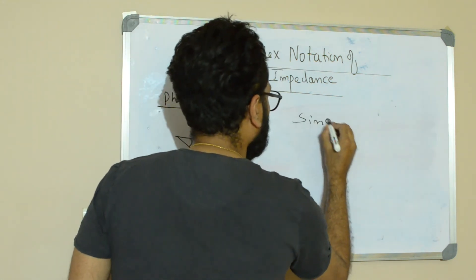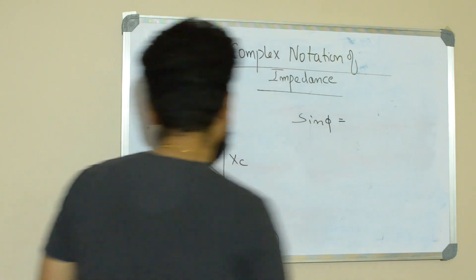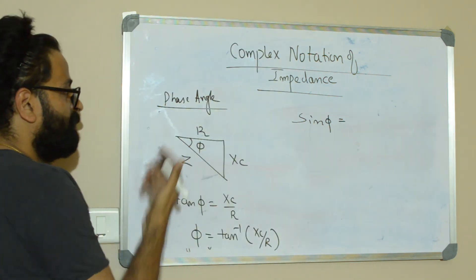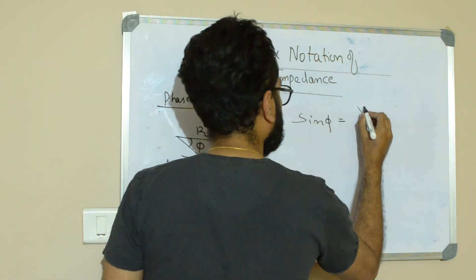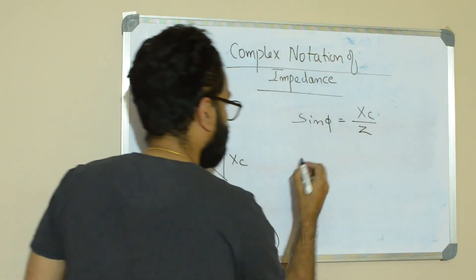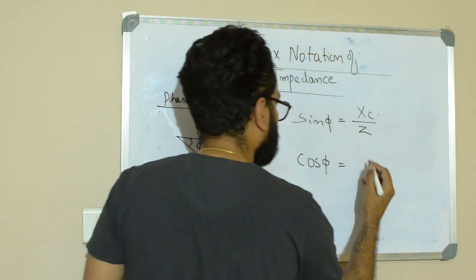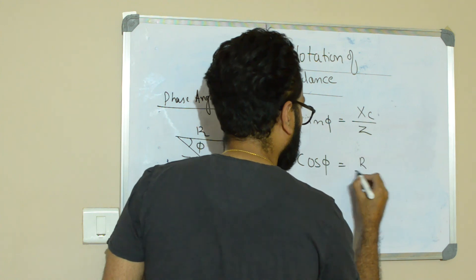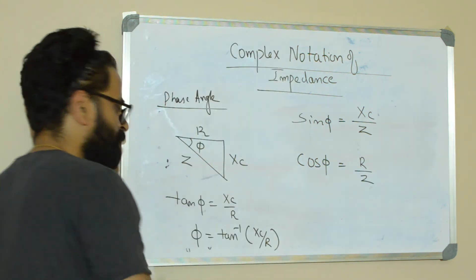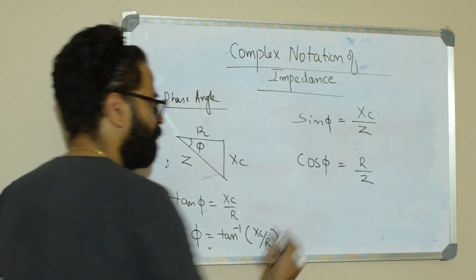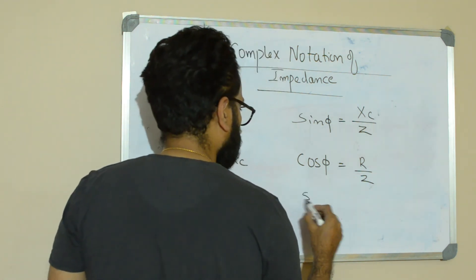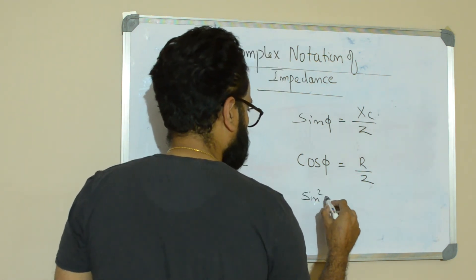Similarly, instead of tan phi, you can even apply sin phi or cos phi. So if you write sin phi, you would get opposite by hypotenuse, that is Xc by Z. In case of cosine angle, it is adjacent by hypotenuse, that is R divided by Z. Okay, you can check the consistency of the formula when you take sin squared phi.